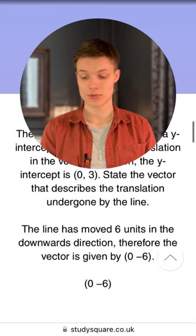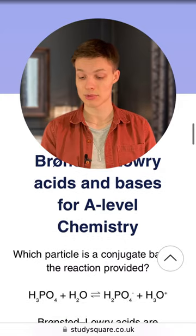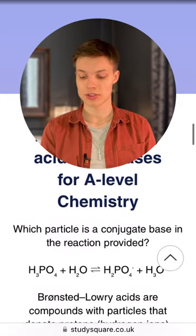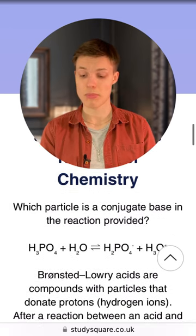So, what kind of mistakes would students make in Bronsted-Lowry acids and bases for A-level chemistry? So it says, which particle is a conjugate base in the reaction provided?